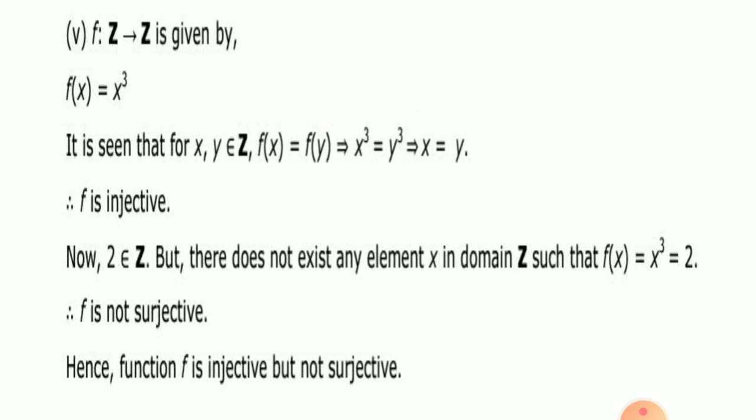Next, f from Z to Z given by f(x) = x³. For every x, y belonging to Z, f(x) = f(y) implies x³ = y³. Taking cube roots on both sides gives x = y. So f is injective. However, 2 belongs to Z but there does not exist any element x in Z such that f(x) = x³ = 2 — it is not possible. Therefore f is injective but not surjective.